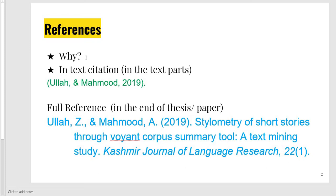References have two parts. One is called in-text citation and the other is the full reference. In-text citation, as the word is self-explanatory, is present in the text — I also call it in Urdu 'chhotu reference', meaning small reference. It includes the first author's last name, or one or two or more authors, then a comma, then the year, then a comma, and the page number. This is called in-text citation.